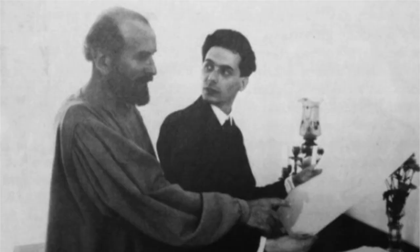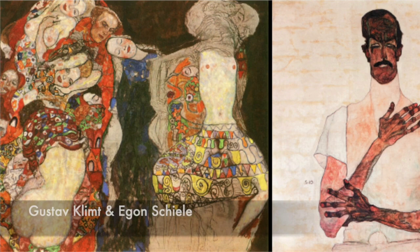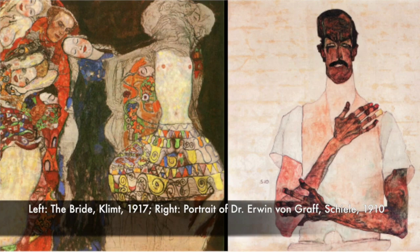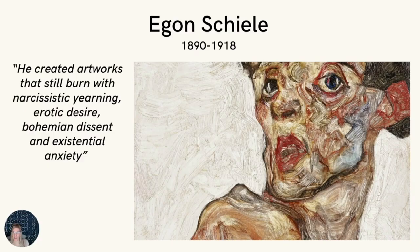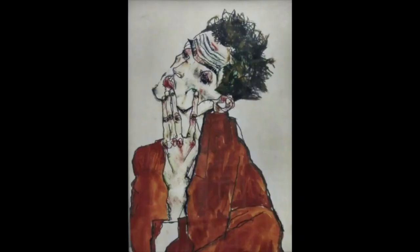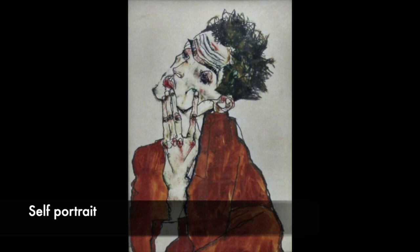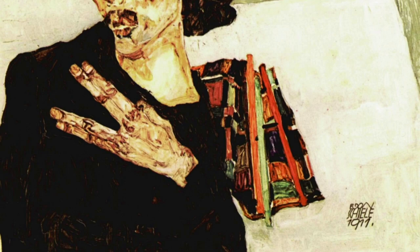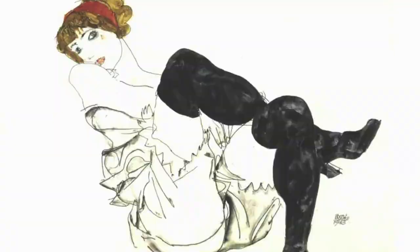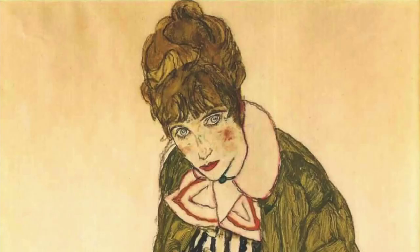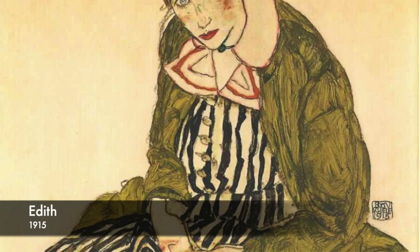Next, we'll talk about Egon Schiele, known to be a protégé of Gustav Klimt and a major figurative painter of the early 20th century. His work was rooted in expressionism, and at the center of his artistic interest was the examination of his own existence. We can see this in the countless self-portraits he executed. Again, Egon Schiele was not exclusively a self-portrait artist—he was a portrait artist who captured the images of people around him—but he did focus quite heavily on the self as subject matter.